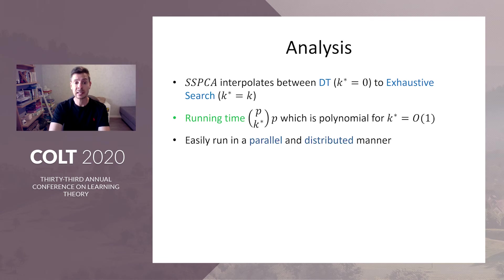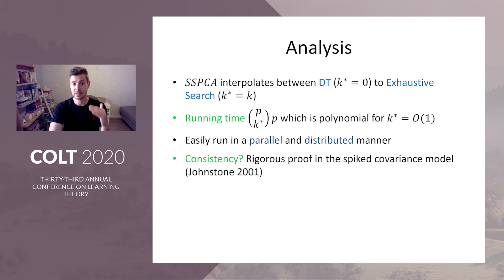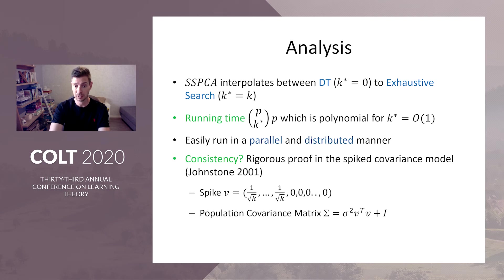Our algorithm is easily run in parallel — this is what our code does, and we'll see it in a minute in the simulation. Another question is consistency. We need to choose K-star sufficiently large so that the algorithm maintains accuracy. We want to increase the running time frugally so that accuracy is maintained. We have found a rigorous scaling of K-star in the spiked covariance model.